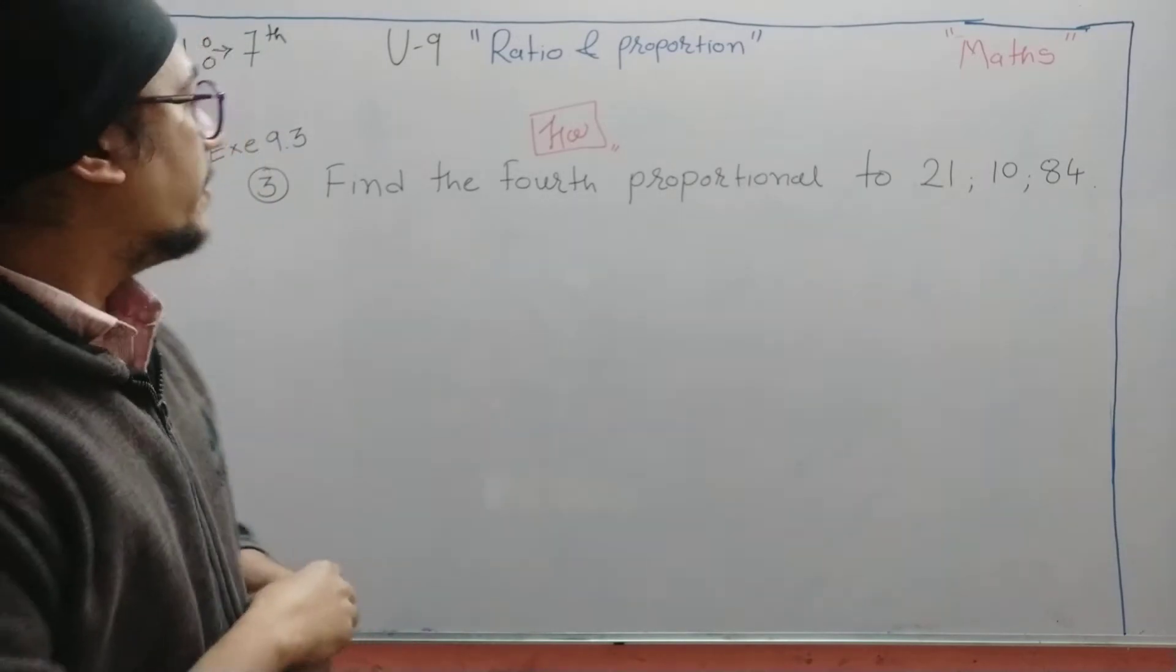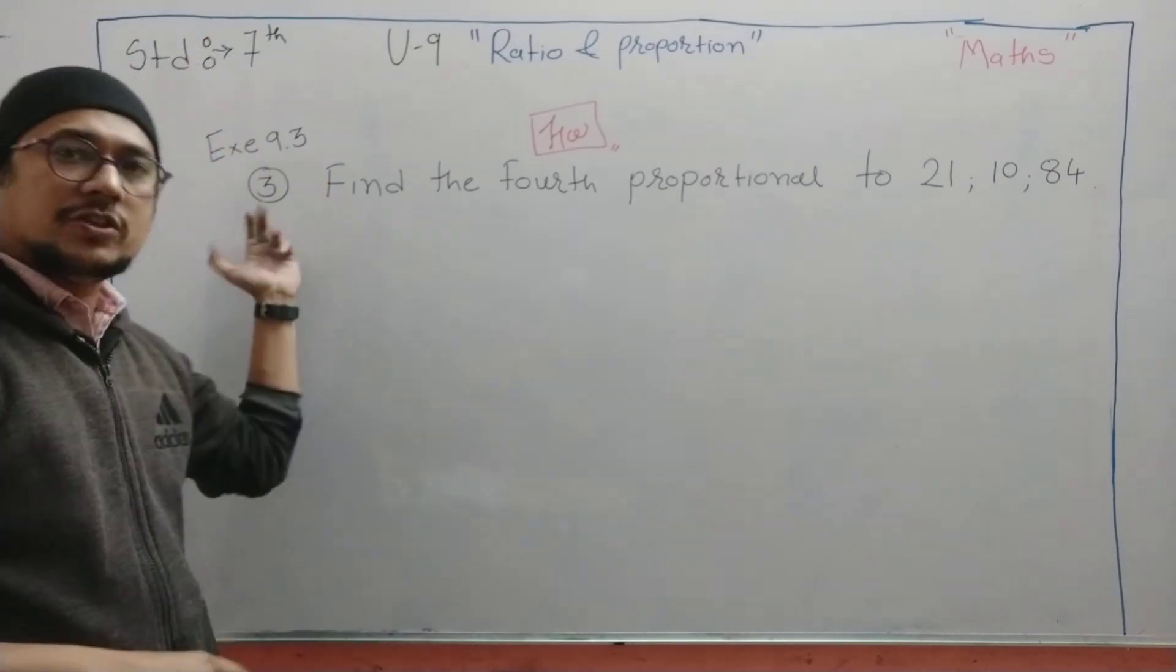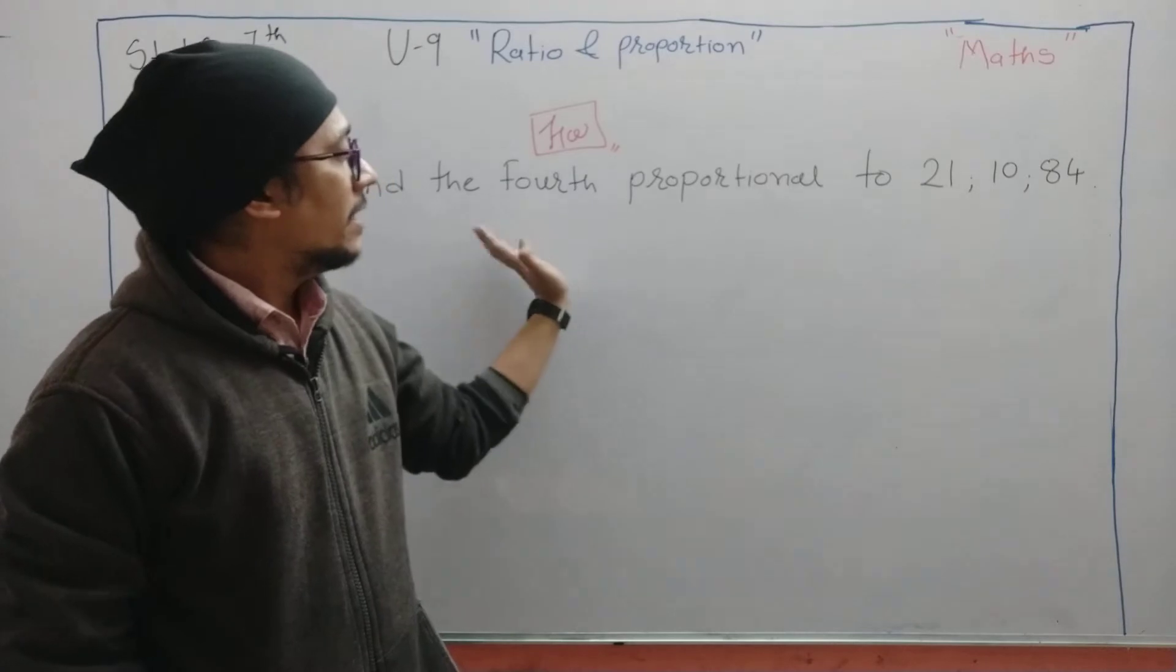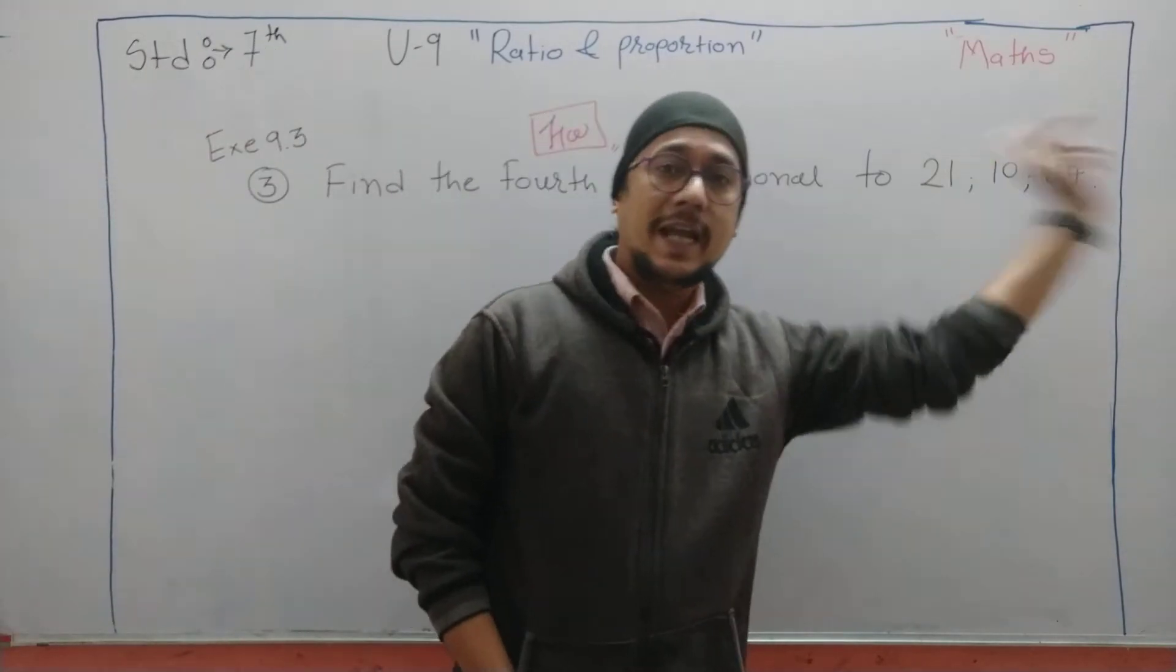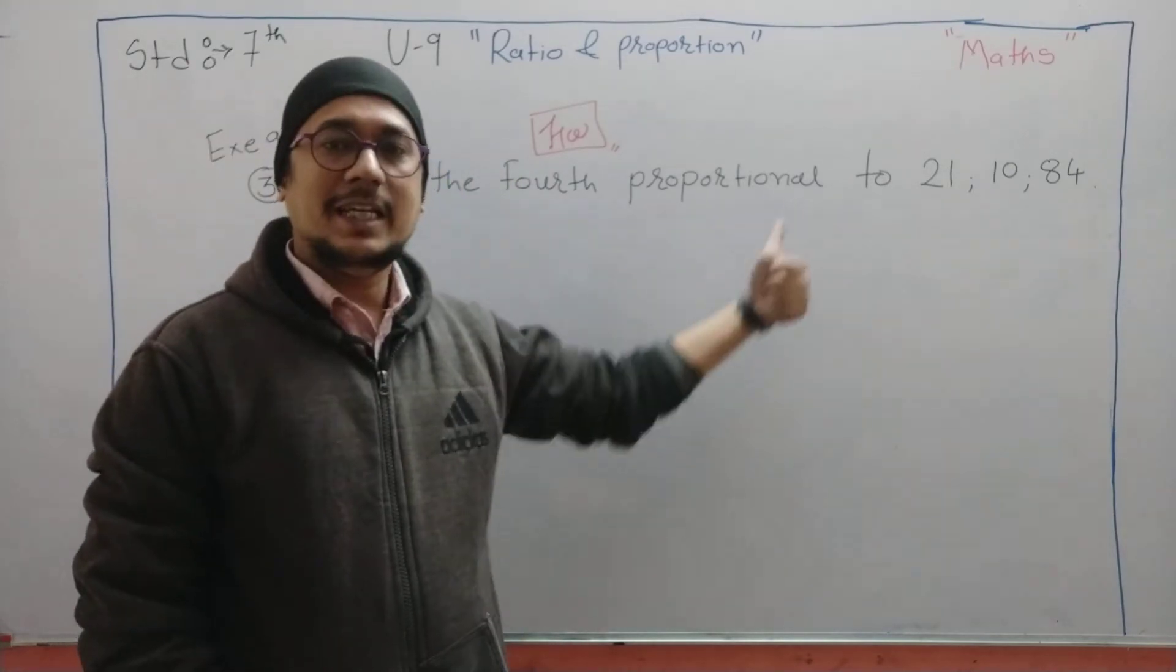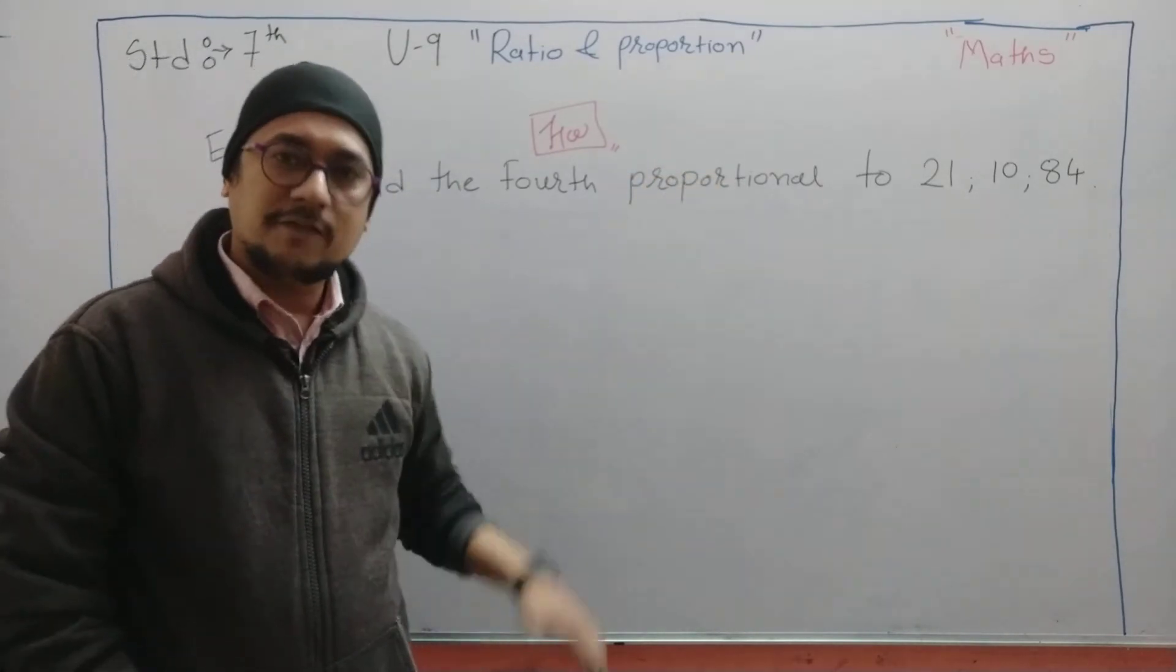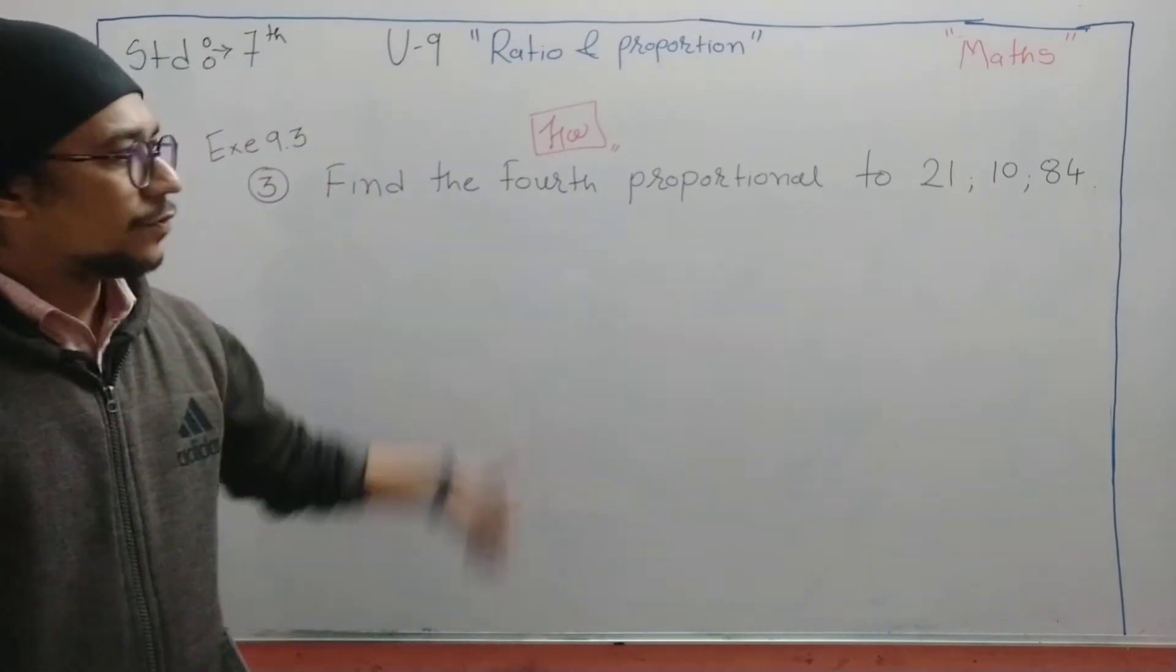Similar kind of problem from exercise 9.3, this is the third problem you will be able to do by yourself. Find the fourth proportional: 21, 10, 84, and x. Just ask: let the fourth proportion be equal to x, write the proportion, write the formula, compare, substitute, then find x. That will be your answer. So this will be the formula.